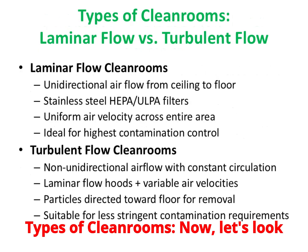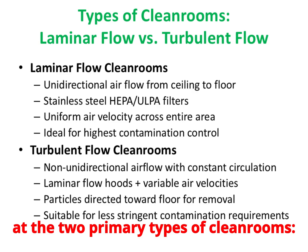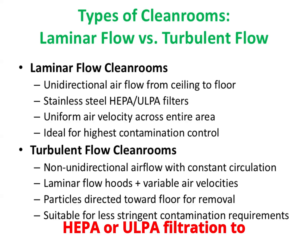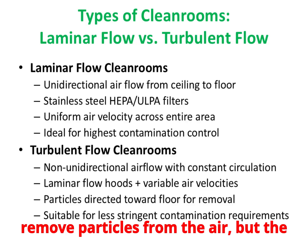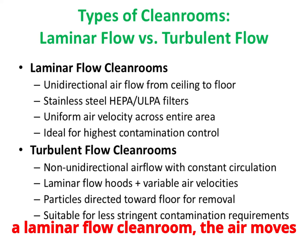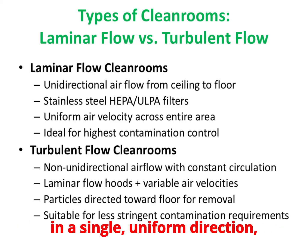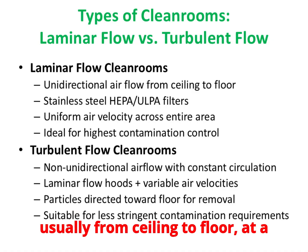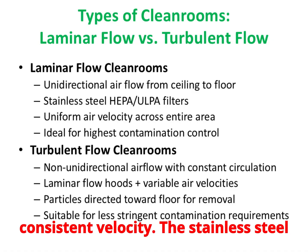There are two primary types of clean rooms: laminar flow and turbulent flow. Both use HEPA or ULPA filtration to remove particles from the air, but the airflow patterns differ significantly. In a laminar flow clean room, the air moves in a single, uniform direction — usually from ceiling to floor — at a consistent velocity. The stainless steel filters ensure minimal turbulence, which means fewer opportunities for particles to swirl back into the work zone.